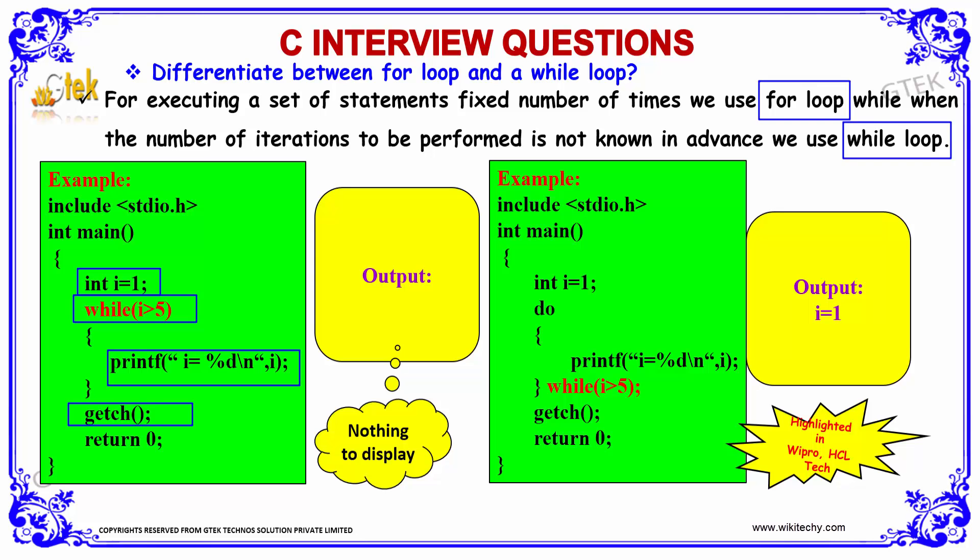Int i equal to 1 is there. If you see the difference between these two programs, here we will be getting the value of output as i equal to 1. Because, once after the output of i equal to 1, the condition is going to be checked over here. So, this is the difference between the two program logics.